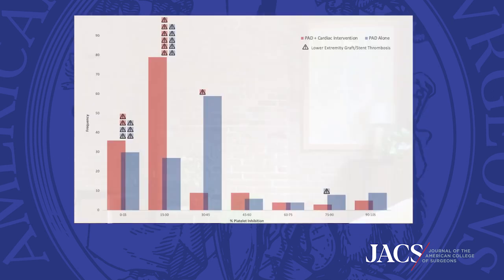The red bars indicate samples from patients with CAD and the red symbols indicate a thrombotic event. The blue bars and symbols indicate the same for patients without CAD.